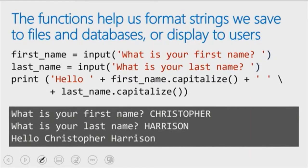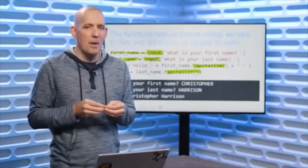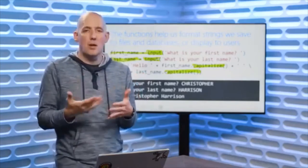In this code example, we're going to read in the first name from the input window — whatever the user types in, we'll bring that in — and do the same with the last name. We can then properly capitalize everything by using that capitalize function. If I type in 'CHRISTOPHER' in all uppercase and 'HARRISON' in all uppercase, then call capitalize, it will just capitalize that first letter. And that's how you can get in and start working with strings inside of Python.